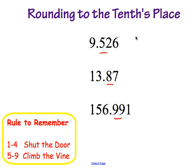So let us try one. The first one is 9 and 526 thousandths. We are looking at that number after the 5 and thinking about our rule — is that 1 through 4 or is that 5 through 9? It is 1 through 4. So we are going to shut the door, or we are going to leave that 5 alone and keep it a 5. Everything after the 5 will turn to zeros. So our answer is 9 and 5 tenths.